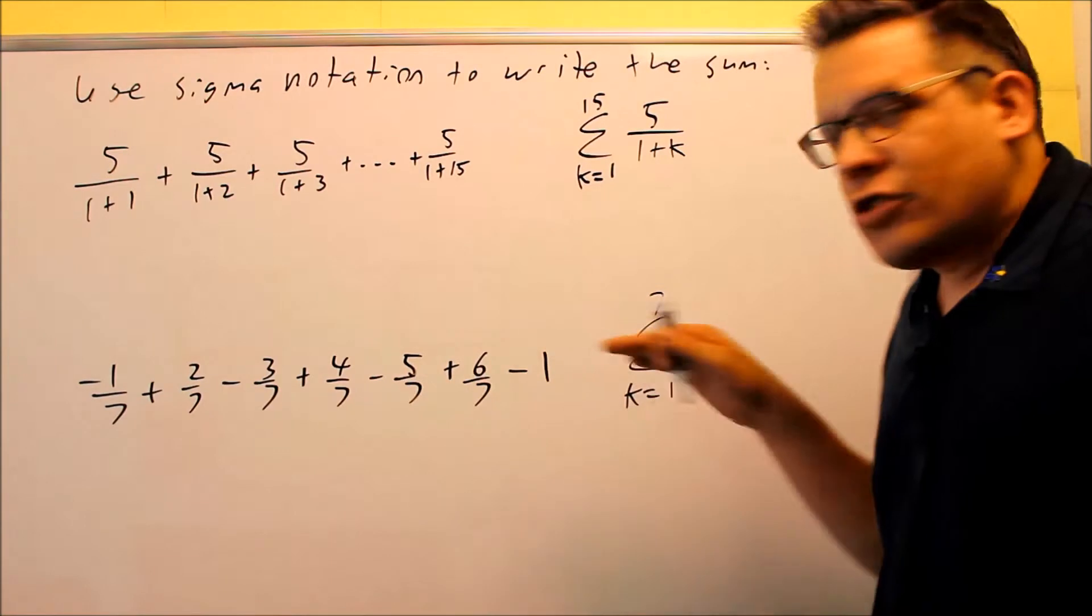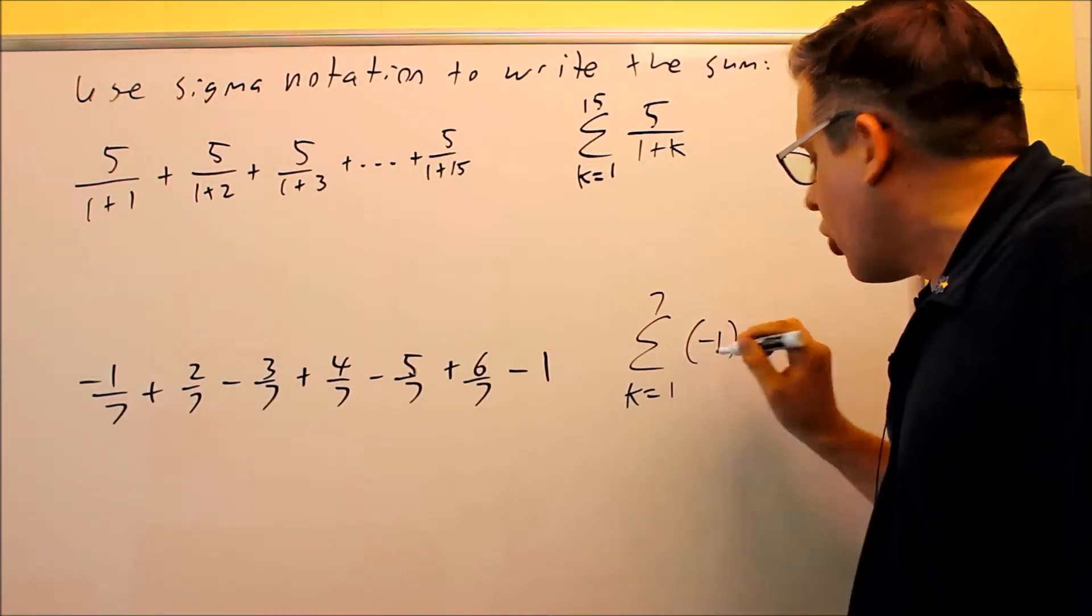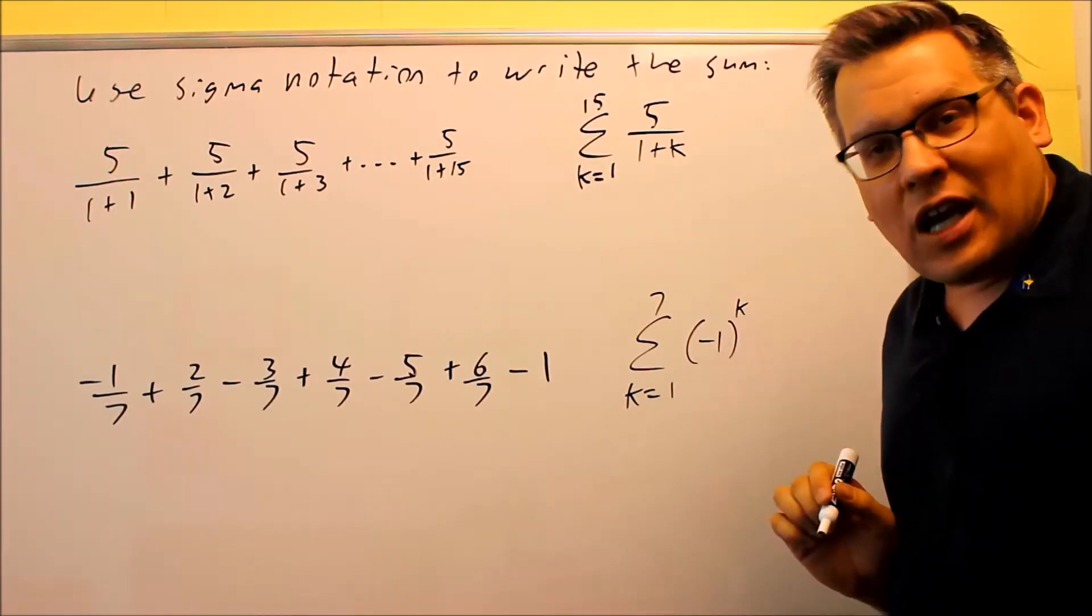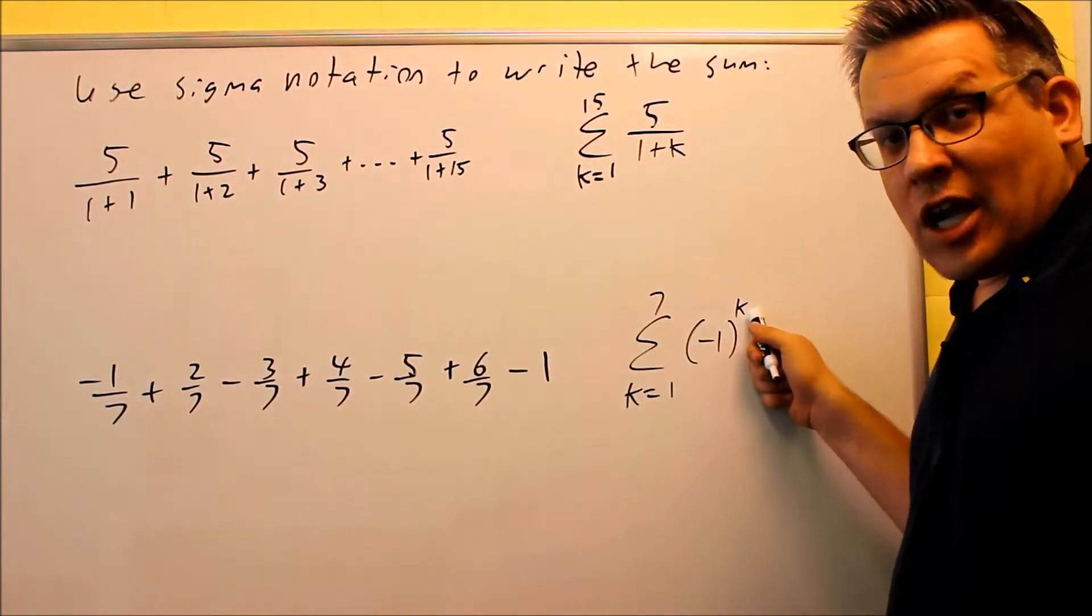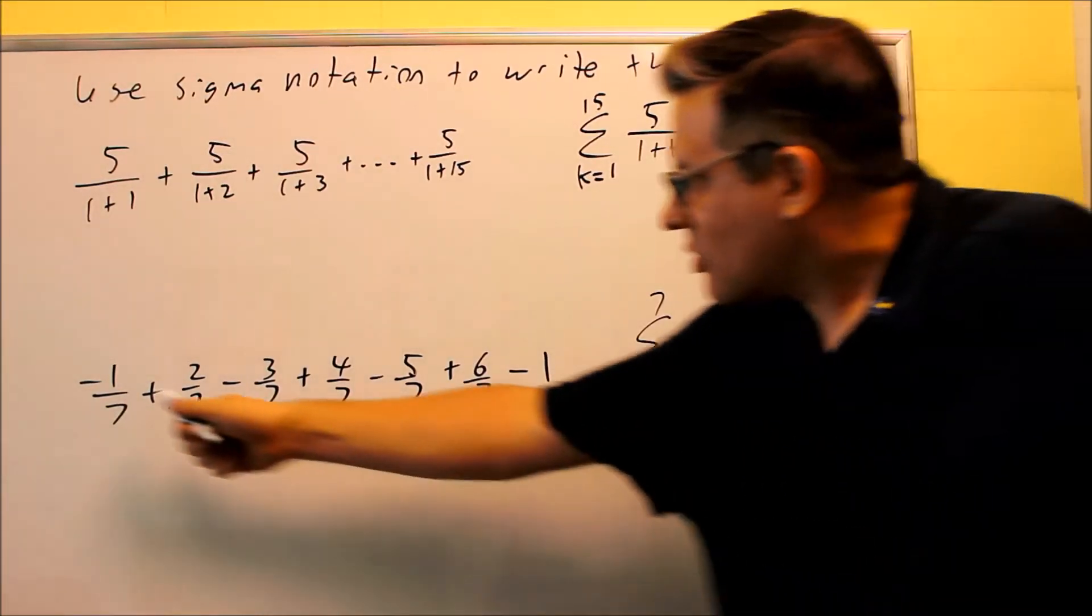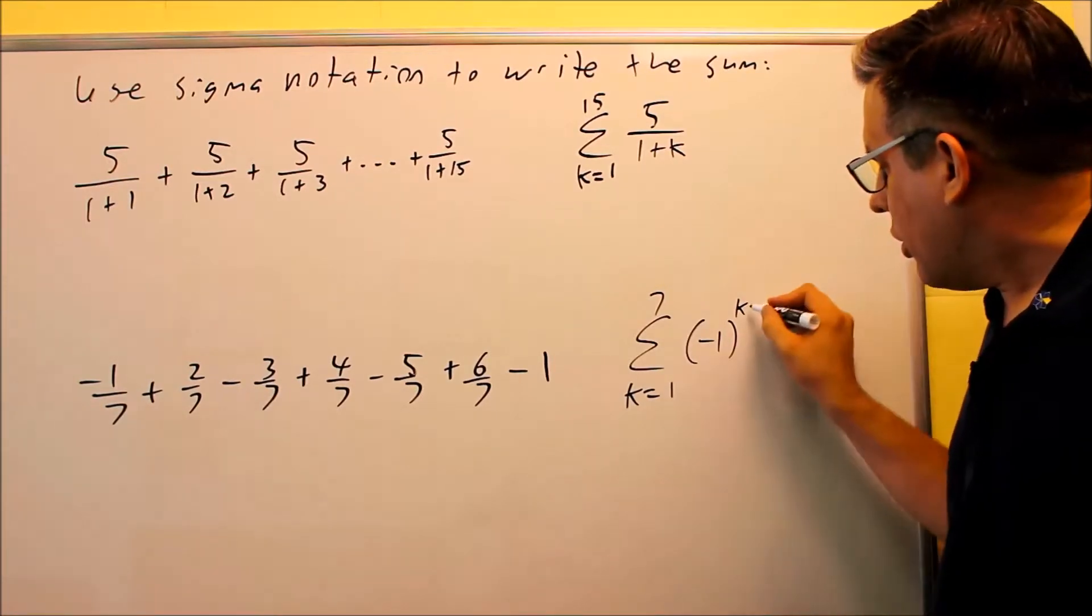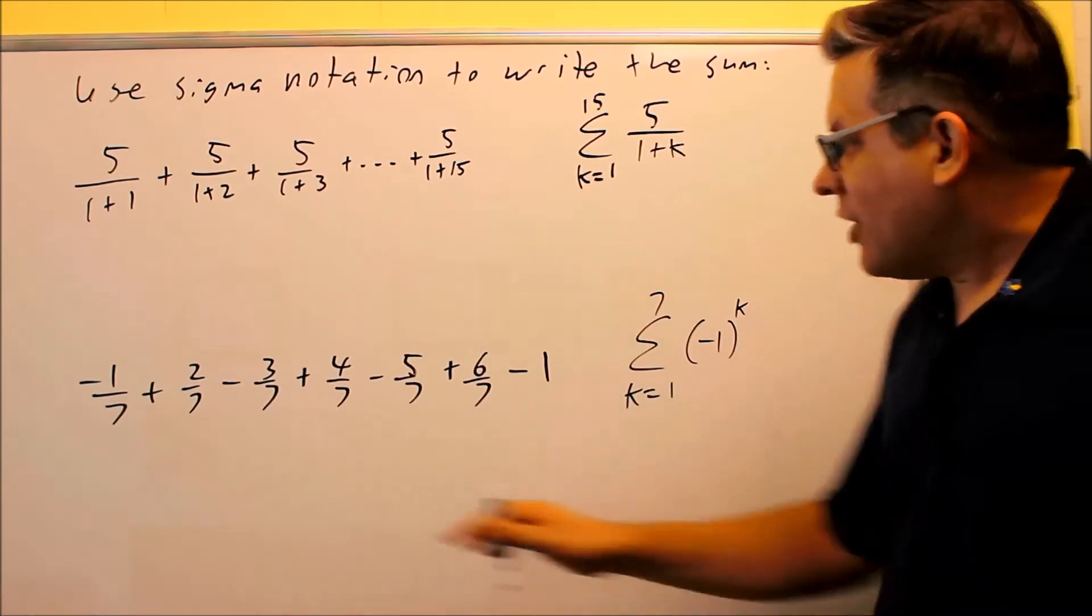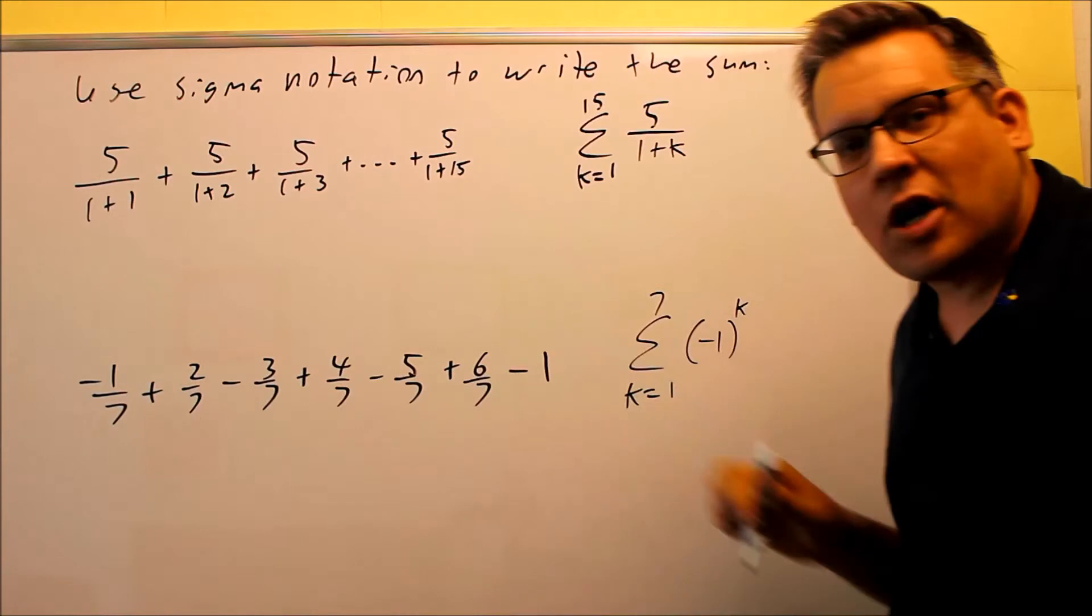We need to do alternating signs, which means that in order to do alternating signs, we showed a problem earlier with that, you have to put a negative 1 raised to the k. So if the first one was positive, we probably would have to make this like k plus 1, because when we put 1 in there we get an even number. But in this case, the first one is negative, so this is okay just to leave it as k. If I put 1 in here, negative 1 to the first power is positive 1, and then it's squared, so it's plus, then minus, plus. So that's going to take care of all the plus and minus signs.